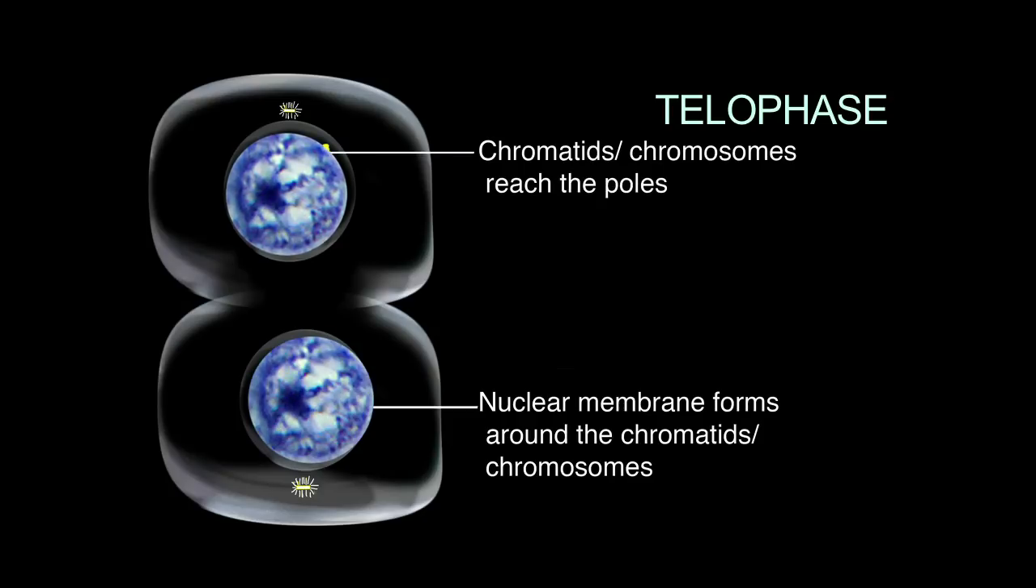Telophase. Mitosis ends with telophase. The chromatids are now referred to as chromosomes and having reached the poles of the cells uncoil and lengthen. A plate forms across the equator of the cell, dividing the cytoplasm and separating into two complete new cells.